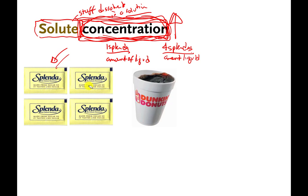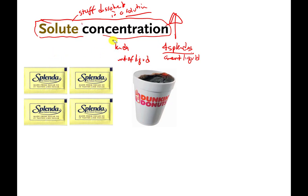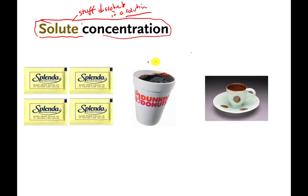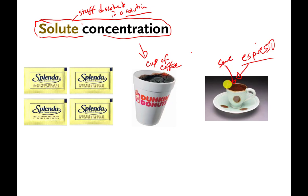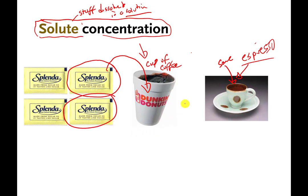Here's another situation. This is my regular cup of coffee from Dunkin' Donuts, and this is an espresso cup. Espresso isn't the same as Dunkin' Donuts coffee, but pretend the same coffee is in my espresso cup — the cup is just smaller. If I dissolve one Splenda in the regular coffee and another Splenda in the espresso cup, which one will taste sweeter, assuming the same type of coffee is in each?